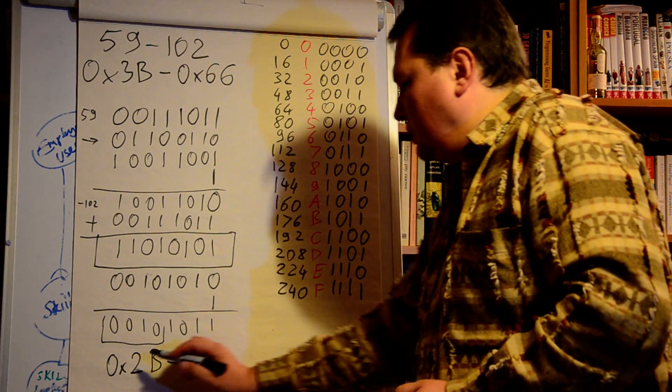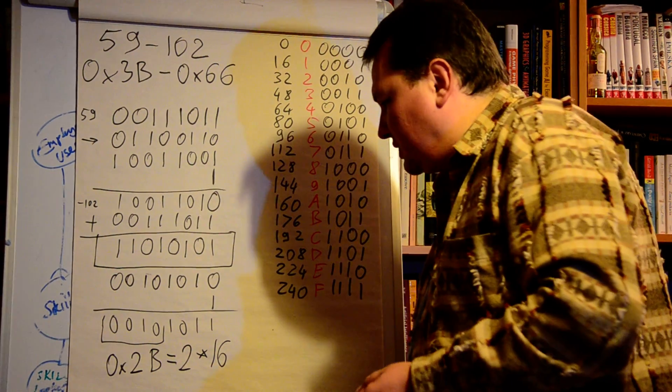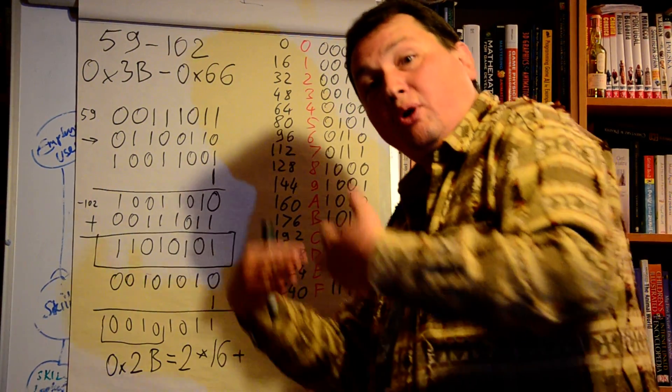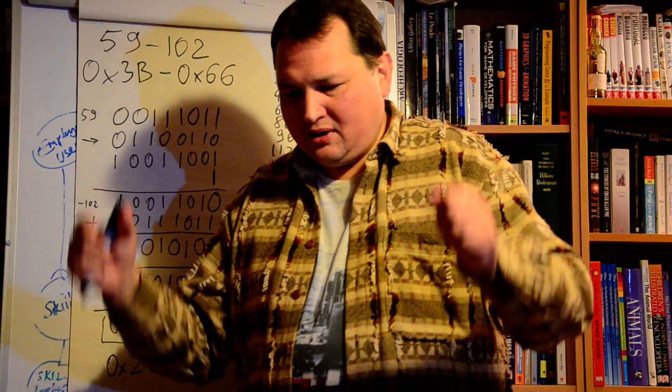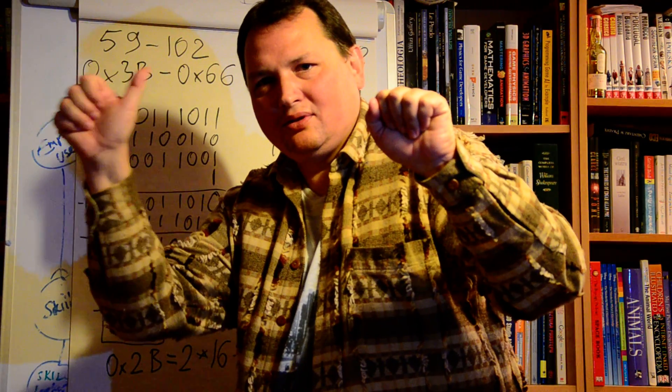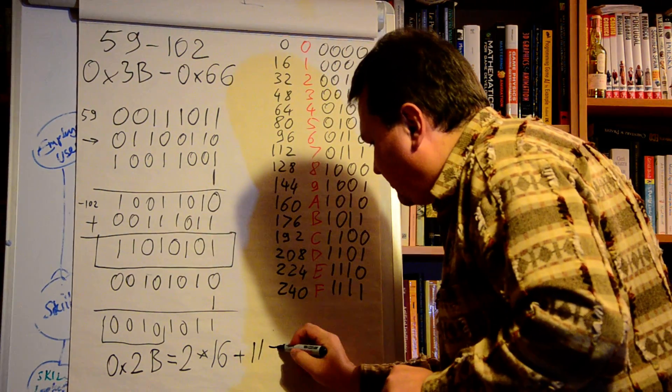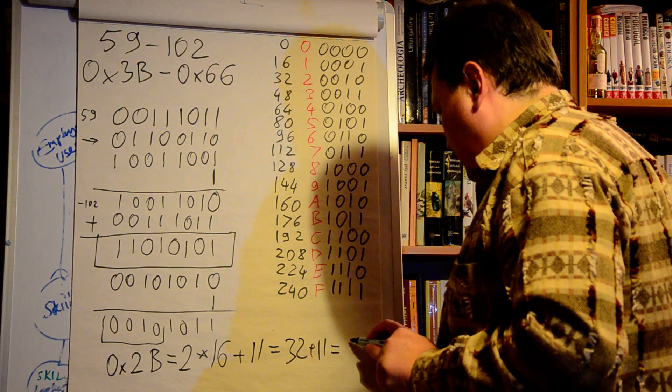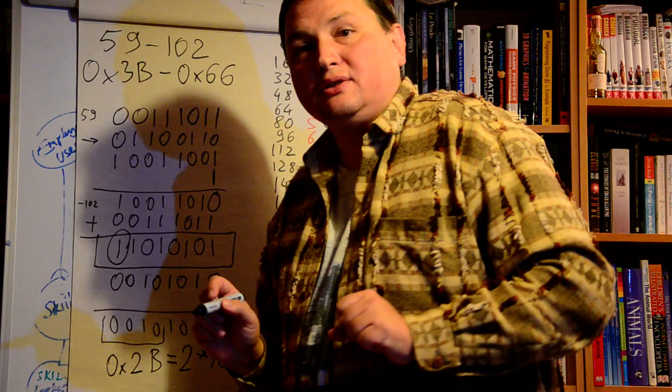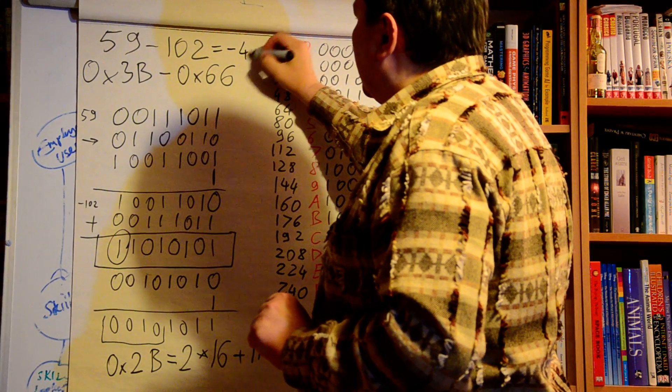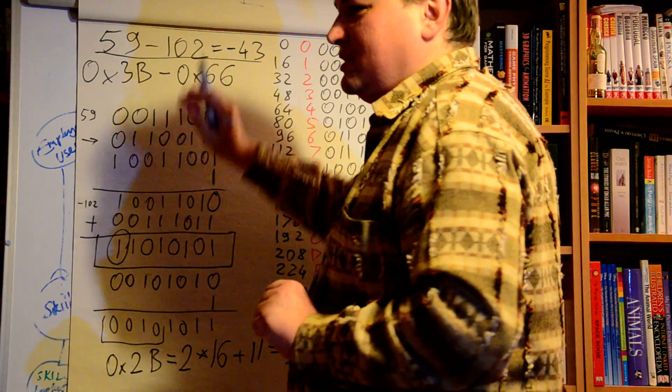Converting this into decimal: 2 times 16, the first digit is the number of 16s in this number, plus B represents the number of units. B is 11, so 2 times 16 plus 11 is 32 plus 11, this is 43. And don't forget that what we have found out here is a negative number, so the result here is minus 43. I hope this is correct if I haven't done any mistake here. Thank you very much.